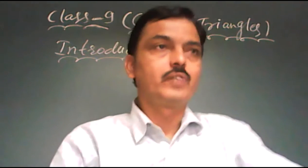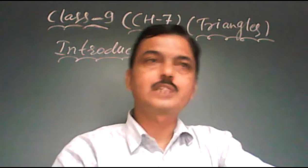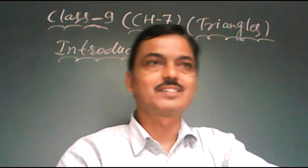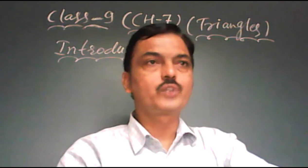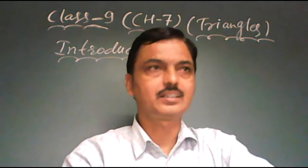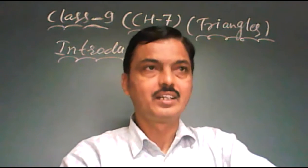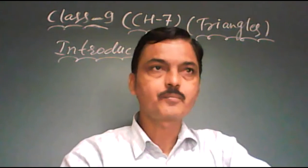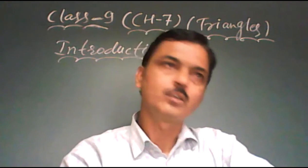Students, we have studied about triangles and their various properties in earlier classes. In class 7th, we know that a closed figure formed by 3 intersecting lines is called a prime. Yes, prime means 3. A triangle has 3 sides, 3 angles and 3 vertices.